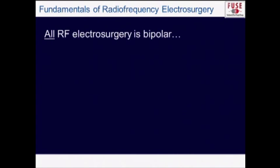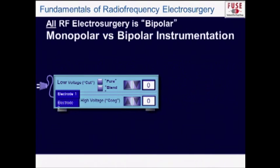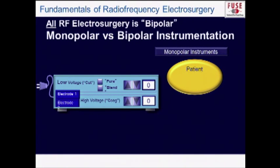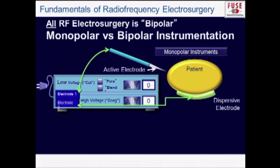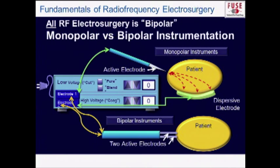All electrosurgery is bipolar — there's no such thing as monopolar electrosurgery because there are always two poles, two electrodes. What differentiates systems is the location and purpose of the second electrode. In a monopolar instrument setup, the active electrode is on the instrument and the dispersive electrode is placed on the patient — meaning the whole patient is interposed between the two electrodes, creating opportunity for current diversion. In a bipolar instrument, both electrodes are on the instrument, so only the tissue between the two jaws is involved.